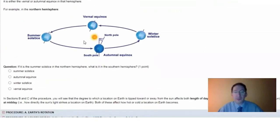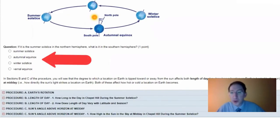Here you can see the diagram for the northern hemisphere. Here the northern hemisphere is tilted towards the sun, so it's summer in the north. And here the northern hemisphere is tilted away, so it's winter in the north. And you're presented with a question here that's worth a point. If it's summer solstice in the northern hemisphere, what is it in the southern hemisphere?